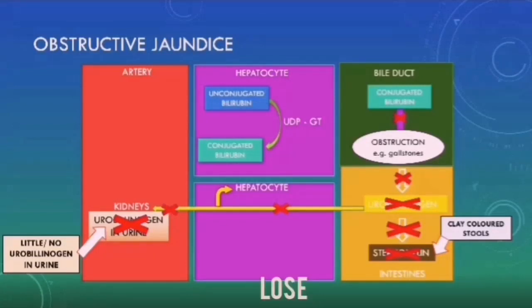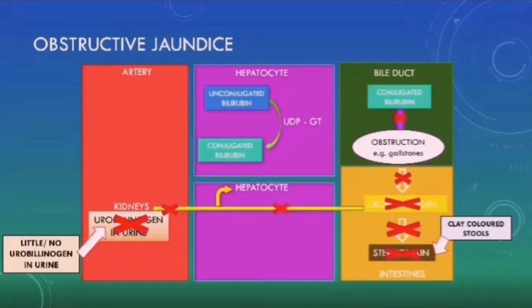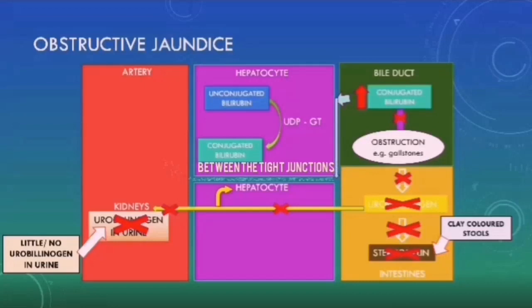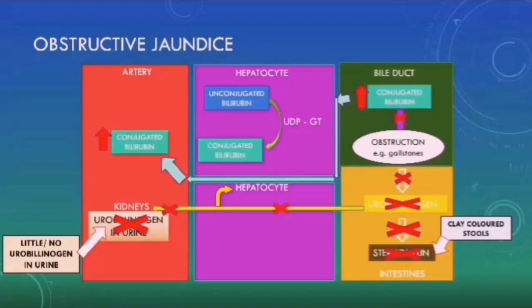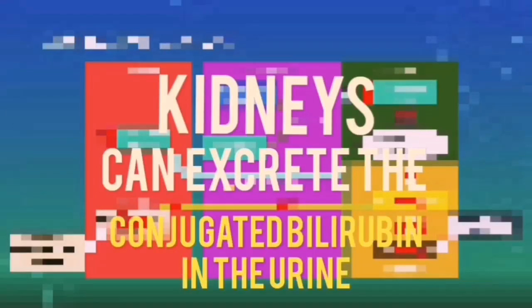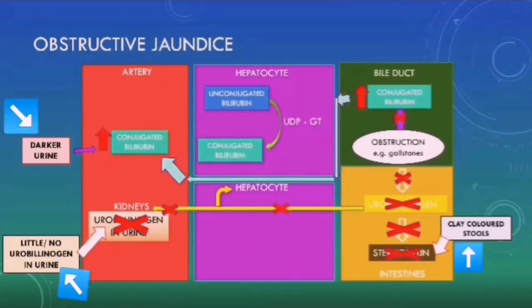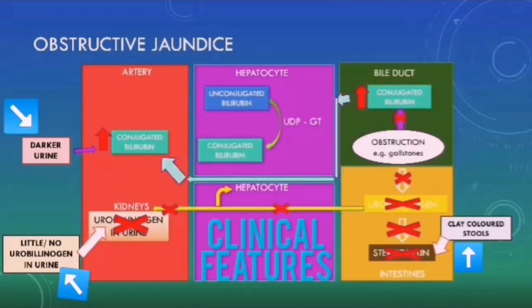Patients with obstructive jaundice can present with clay-colored stools because they lose the normal brown pigmentation that stercobilin would normally provide. The conjugated bilirubin will start to build up in the bile ducts and can leak out between the tight junctions of the hepatocytes, eventually reaching the systemic circulation and causing hyper-conjugated bilirubinemia. As the conjugated bilirubin is water-soluble, the kidneys can excrete it in the urine, causing darker urine. These are the clinical features of obstructive jaundice.